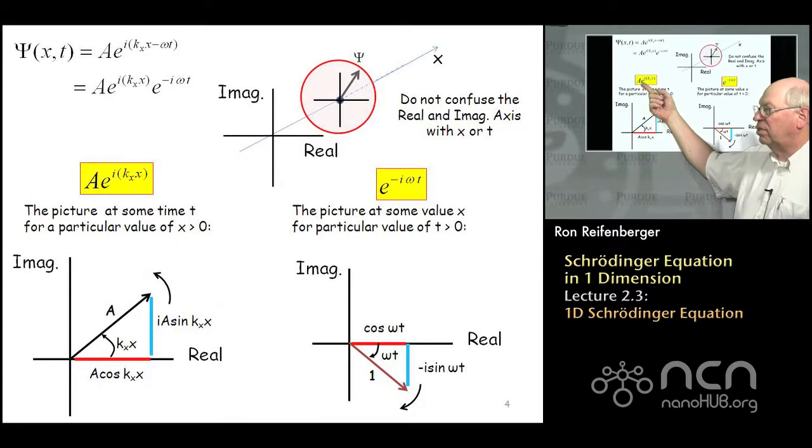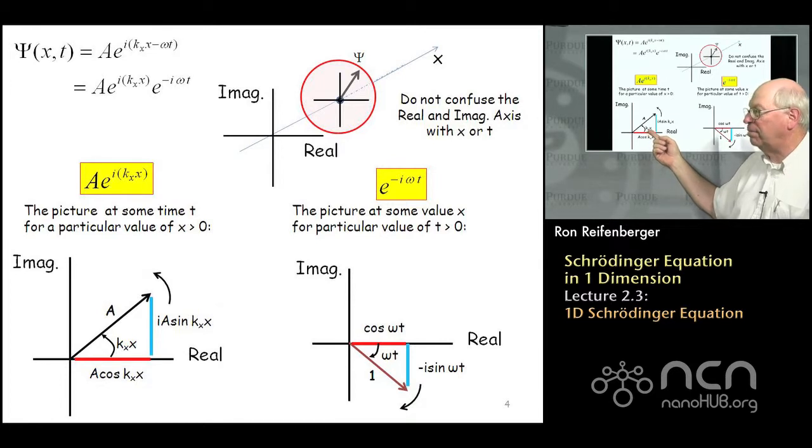So this function is a rotating function, a counterclockwise rotating function as x increases, because the angle that the vector A makes with respect to the real axis is given by the product of k sub x times x.